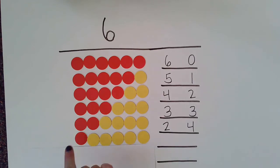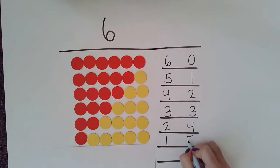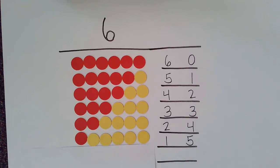Now I have one red and five yellows. So if I put one and five together, I'll make the number six.